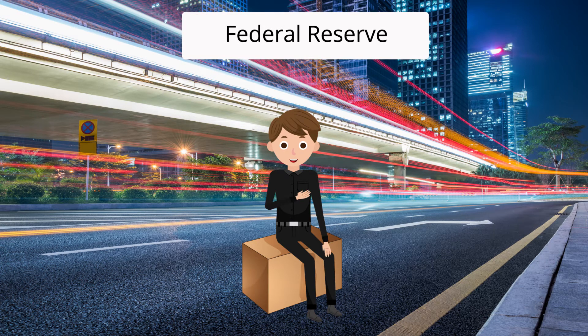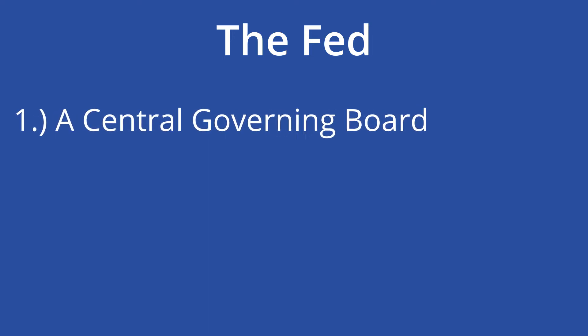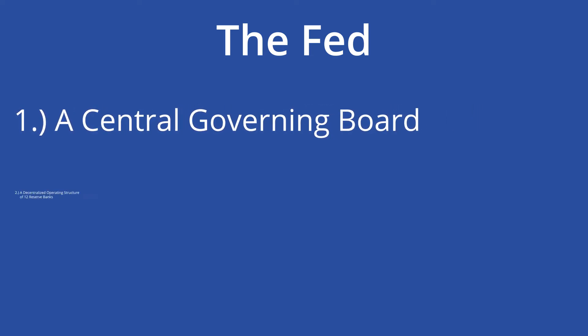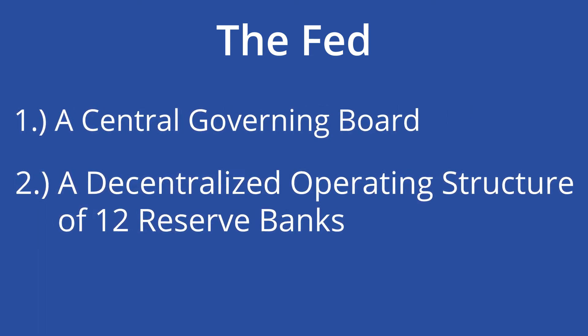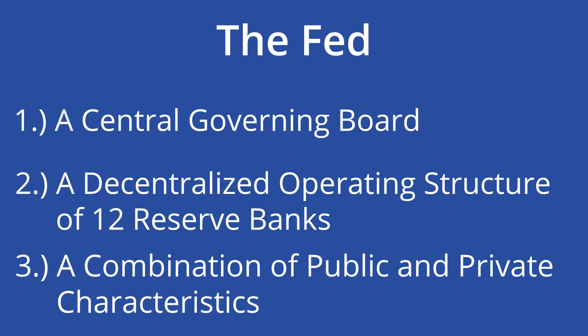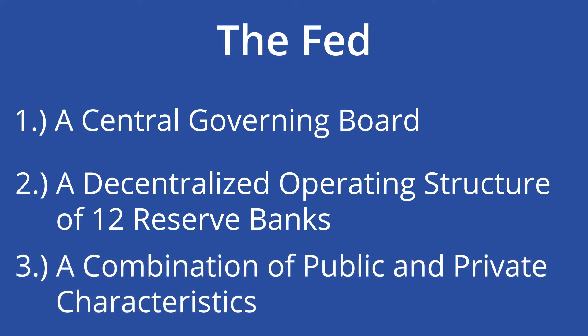The Federal Reserve, or the Fed as it is commonly referred to, was created in 1913 by the Federal Reserve Act to serve as the central bank of the United States of America. The architects of the Federal Reserve Act were against the concept of a single central bank. Thus, the Fed has three crucial parts: a central governing board, a decentralized operating structure of 12 reserve banks, and a combination of public and private characteristics.